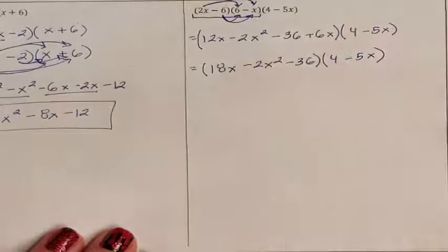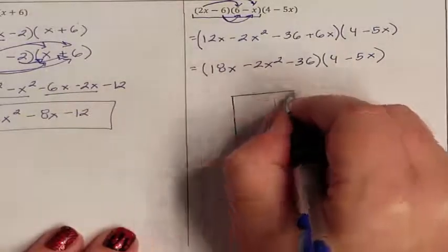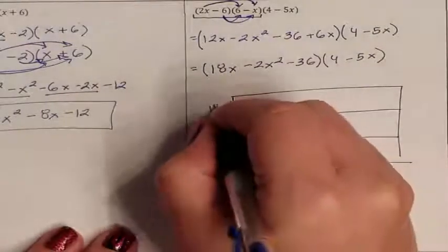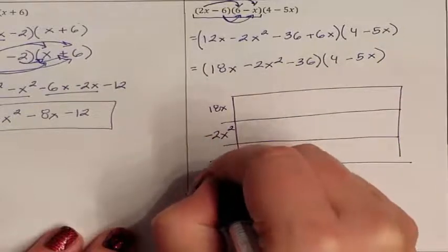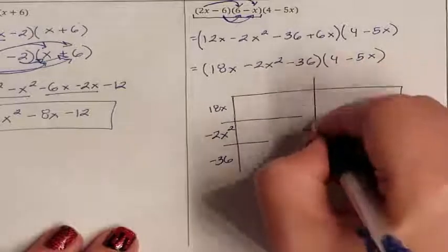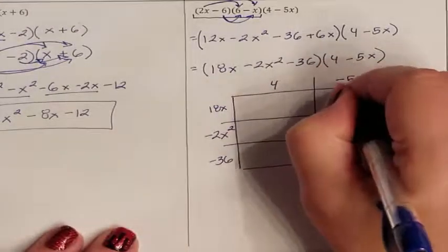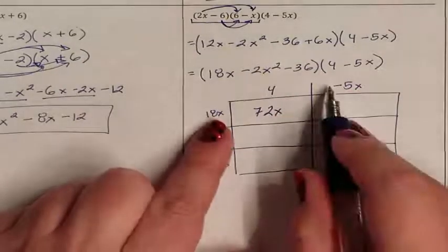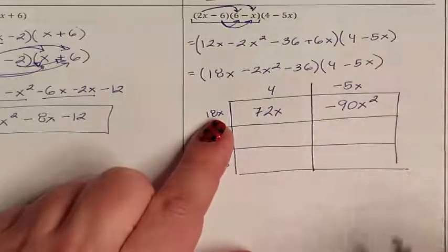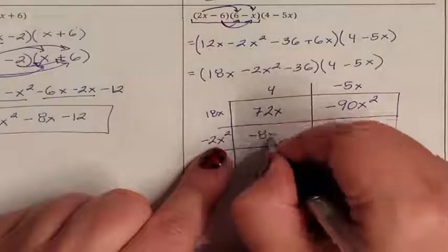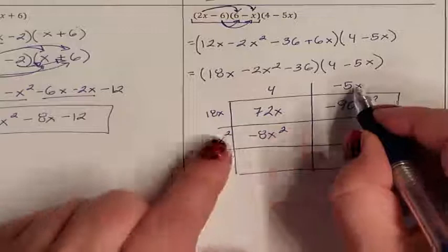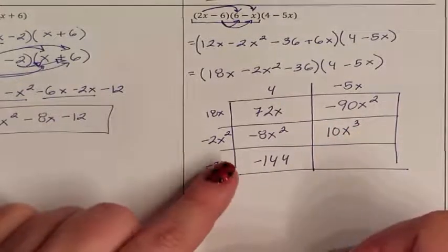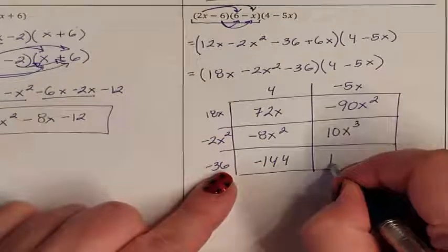Now I need to multiply that result by the third parenthesis. It's getting big, so I'll use the area model. First parenthesis on the first side with three terms: 18x, negative 2x squared, and negative 36. Second parenthesis on the second side with two terms: 4 and negative 5x. Multiplying: 18x times 4 is 72x. 18x times negative 5x is negative 90x squared. Negative 2x squared times 4 is negative 8x squared. Negative 2x squared times negative 5x is positive 10x to the third. Negative 36 times 4 is negative 144. Negative 36 times negative 5x is positive 180x.